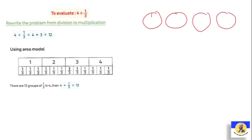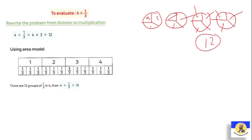For 4 divided by one third, let's use the area model with 4 parts: 1, 2, 3 — then 1, 2, 3 — then 1, 2, 3 — then 1, 2, 3. Counting all the third parts: 1, 2, 3, 4, 5, 6, 7, 8, 9, 10, 11, 12 — that's 12 parts. Using Keep, Change, Flip for whole number divided by a fraction: keep 4, change divide into multiply, flip 1 over 3 to 3 over 1. So 4 by 3 equals 12. The answer equals 12.